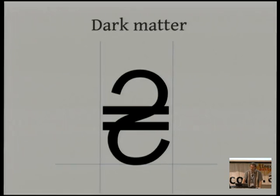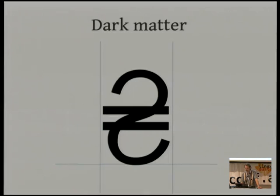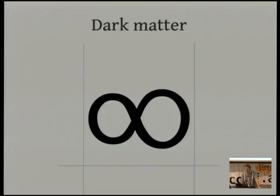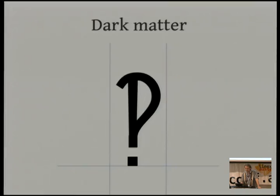Currency signs are another really big one — outside of Europe, which has one currency sign, there are a lot of them all over the world and they're usually not complicated. For example, the Ukrainian hryvnia sign is sort of an S with an equal sign on it. Mathematical symbols are important too — a lot of fonts will go as far as plus and minus, maybe divide, but there's always more math needed. Punctuation is another area: if you want to add the upside-down exclamation point used in Spanish, you can do that — you'd just copy the regular exclamation point and rotate it.